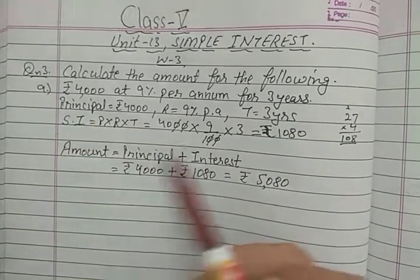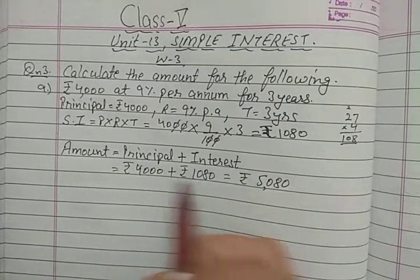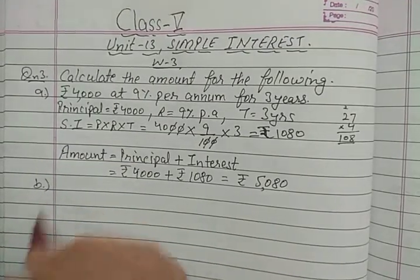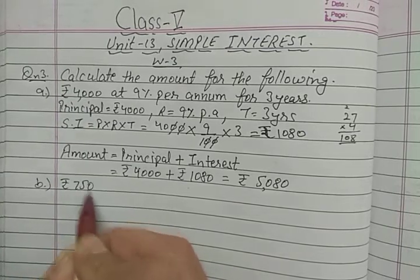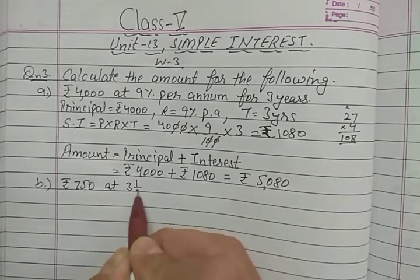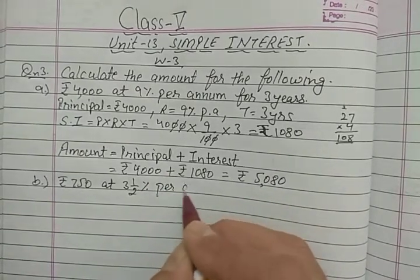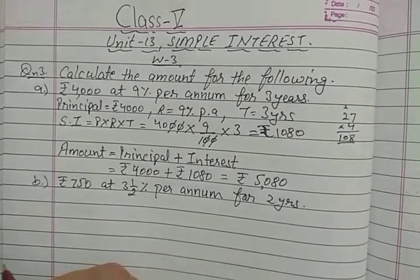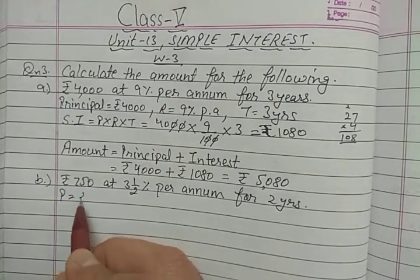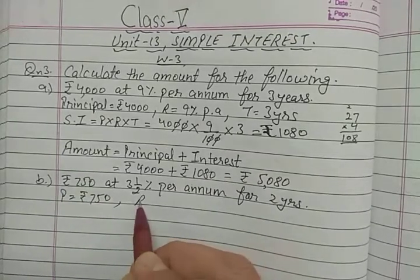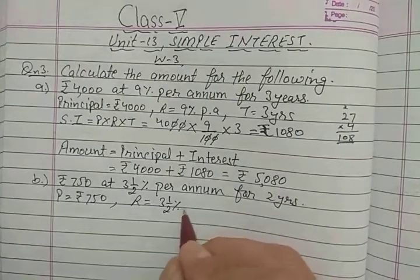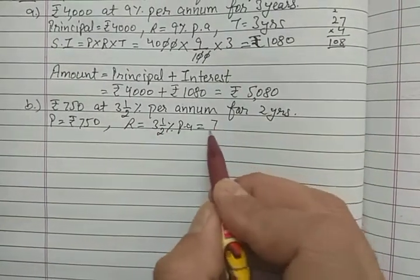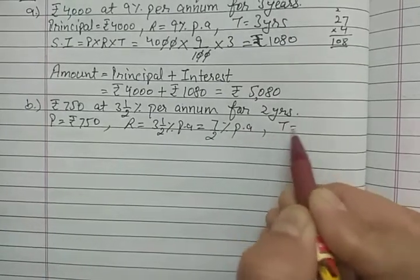Let us do Part B: rupees 750 at three and one-half percent per annum for two years. Principal is 750 rupees. Rate is 3½% per annum — convert to improper fraction: 7/2 percent per annum. Time is two years.